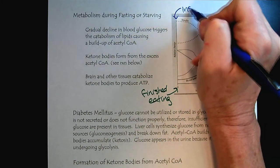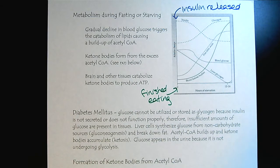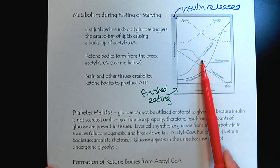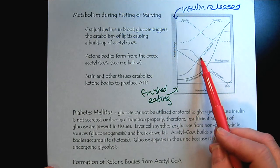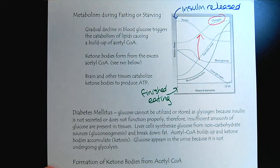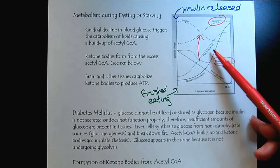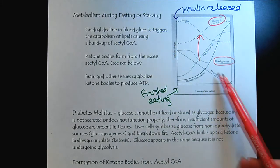Once we've finished eating, insulin is released, triggering glycolysis and glycogenesis. Then we get a gradual decline in blood sugar. As blood sugar declines, that triggers the release of glucagon, which then triggers glycogenolysis and gluconeogenesis. We see a buildup of free fatty acids and liver glycogen starts to drop.